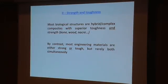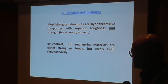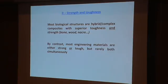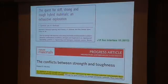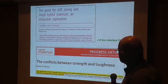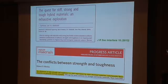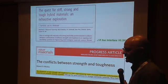So, strength and toughness. Most biological materials are bi-complex composites. They have superior toughness and superior strength. This is amazing because, by contrast, engineering materials are either strong or tough, but almost never both simultaneously. It's changing slowly, but we are still very far from what nature has been able to create. As you can see from these articles, this is a hot topic that people have been looking at for the last few years.